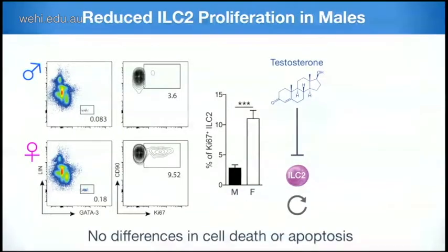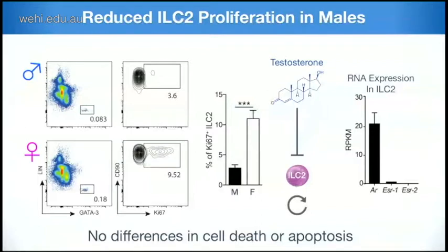How does testosterone mediate its effect on ILC2? We first tested whether testosterone was increasing cell death or apoptosis of ILC2 — it was not the case. We then tested if it could affect proliferation using Ki-67 staining, and impressively, ILC2 from females were much more proliferating. We hypothesized that testosterone is inhibiting the proliferation of ILC2. It was very interesting to see that ILC2 expressed high levels of the androgen receptor, while estrogen receptors were not expressed. Importantly, among all ILC subsets, only ILC2 expressed the androgen receptor.